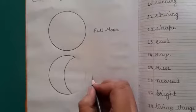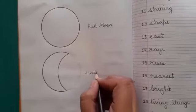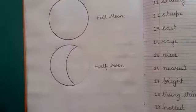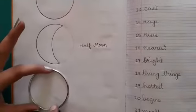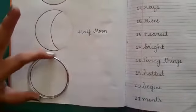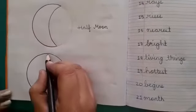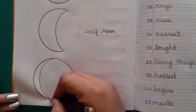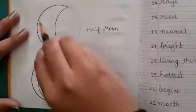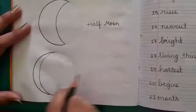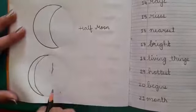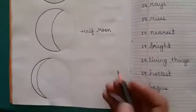Write here half moon. Now again take a bangle and draw a circle. Draw a semicircle like this and erase the extra one. So the third one is crescent moon.